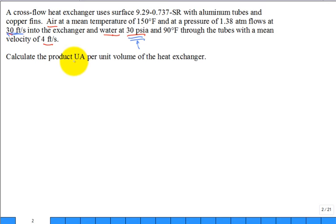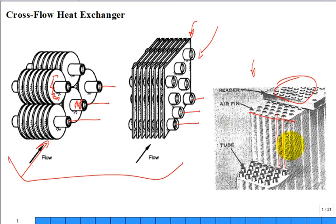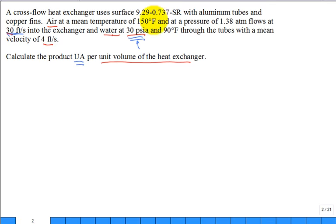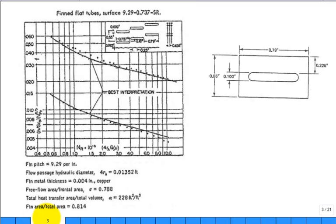We're asked to calculate the product UA, the overall heat transfer coefficient times area, per unit cubic foot volume of the heat exchanger. This means per one cubic foot of the heat exchanger. The surface designation number tells us the specific geometry, so we look it up in the textbook.